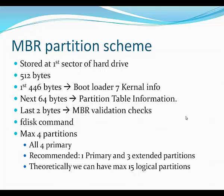The master boot record is the starting point of a hard drive on a spiral disk. It consumes 512 bytes of data: the first 446 bytes contain bootloader and kernel info, the next 64 bytes contain partition table information, and the last 2 bytes are used for validation check. The fdisk command is used with the MBR partition scheme. You can create four partitions — either all four primary, or one primary and three extended partitions. Theoretically, you can have a maximum of 15 logical partitions.